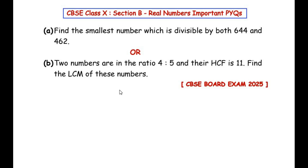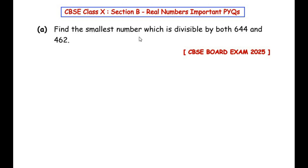Hello and welcome to my channel. In this video we are going to solve a section B question from the Real Numbers chapter. This question has an OR question as well — you can attempt either the A question or the B one. Let us start with the A question: find the smallest number which is divisible by both 644 and 462. To find the smallest number perfectly divisible by these two numbers, we have to find the LCM.